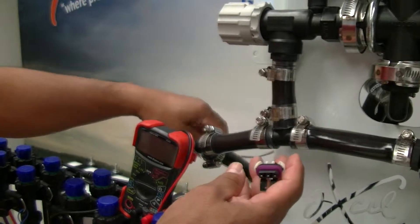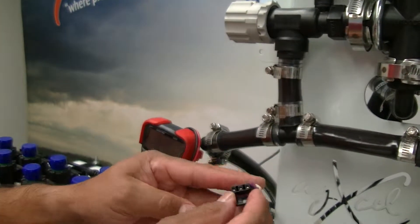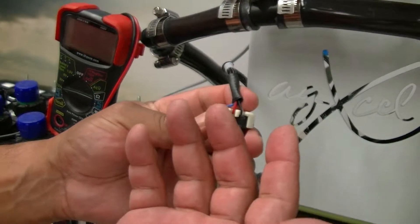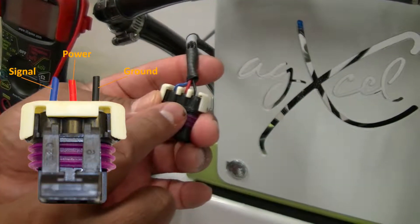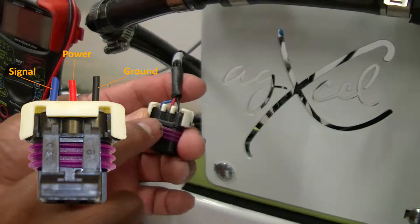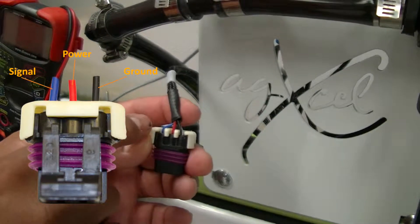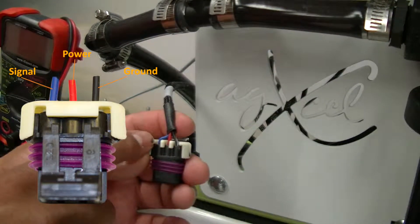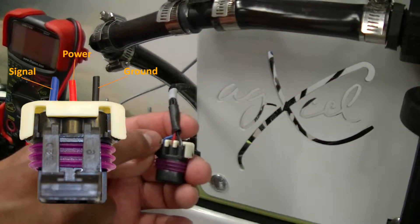When you look at the harness colors and if you look at our documentation, we do have the wiring diagrams, but black is ground, of course, pretty common. Red is power. And then the colored wire, anything other than red and black is going to be your signal. So in this case, it's going to be blue.